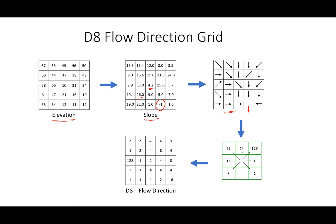Look at this cell which has a value of negative 1. We can think of this as a sort of outlet. All the cells around it have higher elevations, and since we don't have elevation values beyond those cells, we don't know where it flows — so I gave it a value of negative 1, meaning we can think of it as the outlet where water flows out.